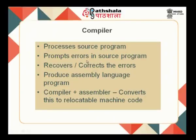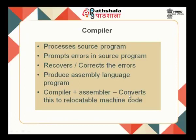The compiler should be in a position to process the source program, prompt errors in the source program, and recover or correct those errors, and produce an assembly language program. The assembler then takes this assembly language program and converts it into relocatable machine code. Nowadays, compilers come with the assembler, so when you have a source program given as input, it converts that directly into final machine code consisting of 1s and 0s.